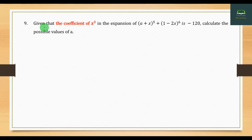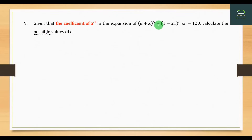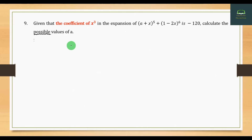Question number 9. Given that the coefficient h in the expression of (a - 2)^5 plus 1 is double 6, equal to minus 120, calculate the possible values of a. Using the expansion, the general term involves nCr times (a)^(n-r) times (-2)^r, specifically minus one to the net power times b.